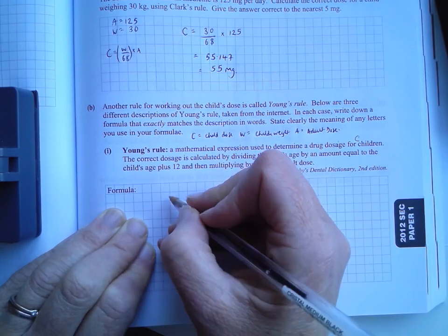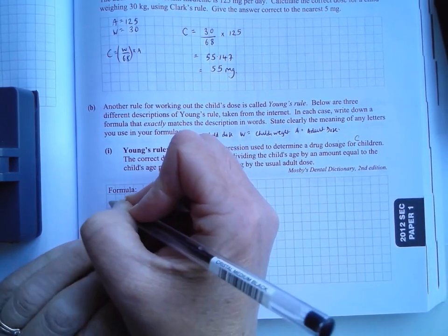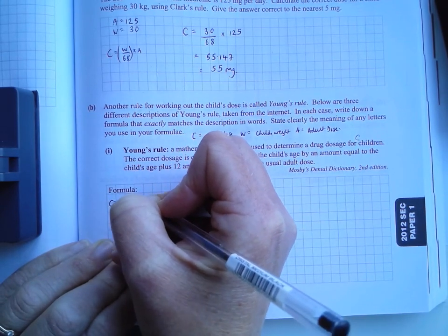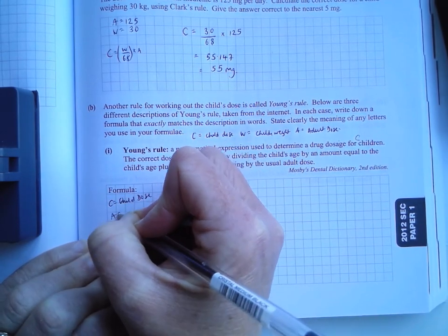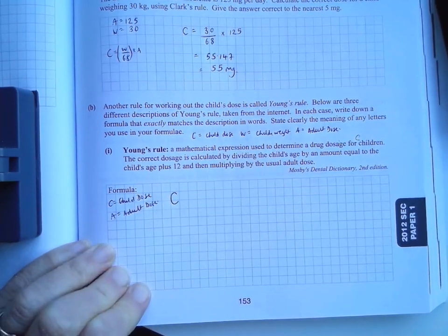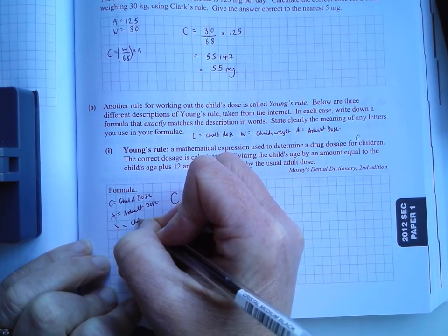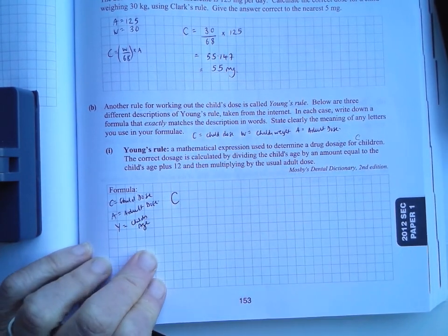And the child dose. Yeah. So that's going to be C. And the adult dose. So let's say C is equal to child dose. A is equal to adult dose. And then let's redo Y. Would that be okay? Y for the child's age in years.